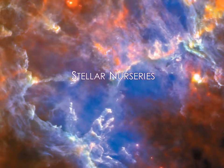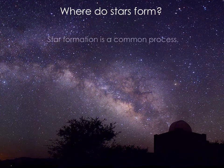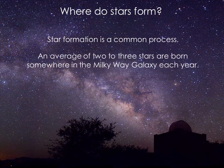Within the disk of our galaxy are vast clouds of gas and dust from which stars are born. These are the stellar nurseries of the Milky Way. Star formation is a common process — an average of 2 to 3 stars are born somewhere in the Milky Way galaxy each year. The dark patches we see in the disk of the Milky Way are interstellar gas clouds, the raw material for star formation.